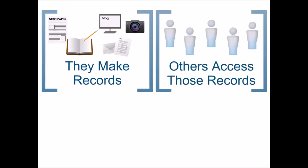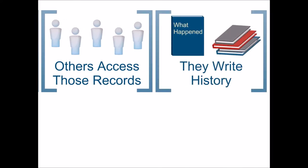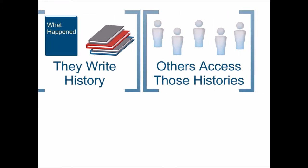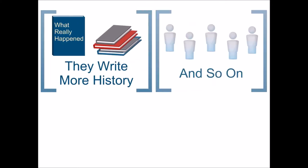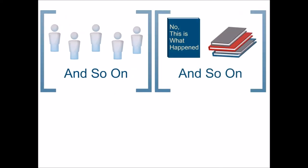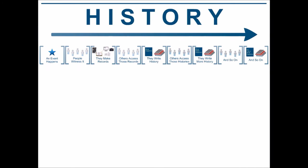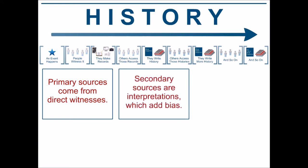From there, others read those first-hand accounts and interpret them — those people are now writing history. Then other people will read those interpretations and interpret them in new ways, writing more history. This process goes on and on. So when it comes to writing history, it's important to recognize that primary sources come from direct witnesses.